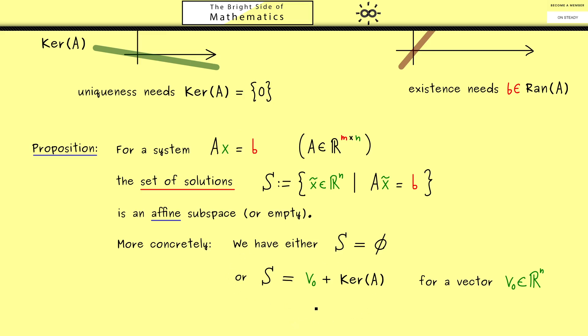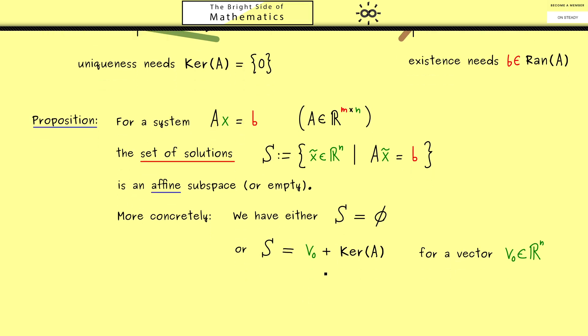Now the only thing missing is maybe the explanation what this notation with the plus sign actually means. It's a vector plus a subspace for denoting a so-called affine subspace. In short I can just tell you it denotes a set with the elements of this form.